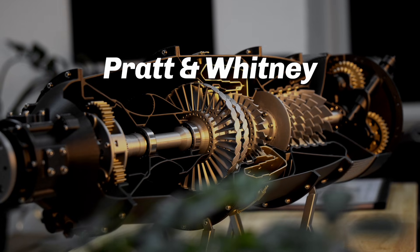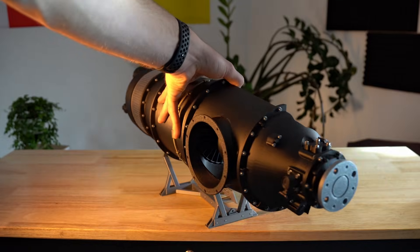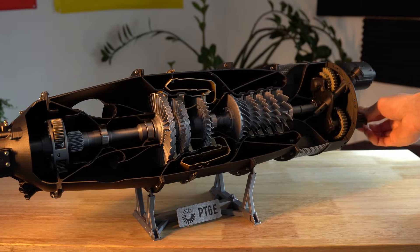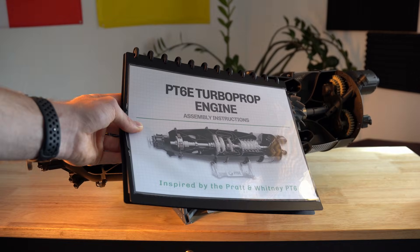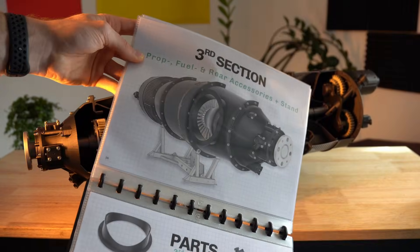I just finished designing a 3D printable version of the Pratt & Whitney PT6, a cutaway model where things move like in the real engine. The assembly is split into three sections. This is section three, let's begin.